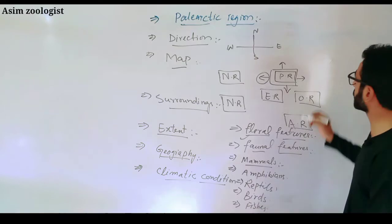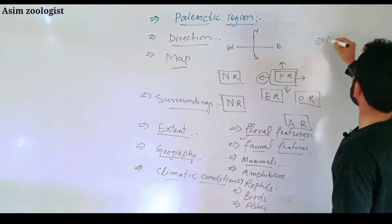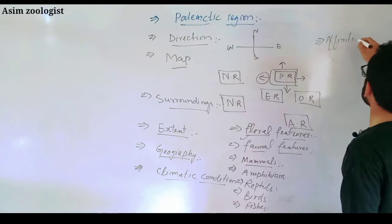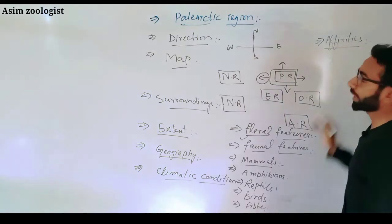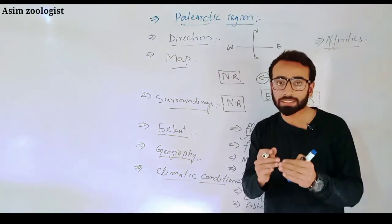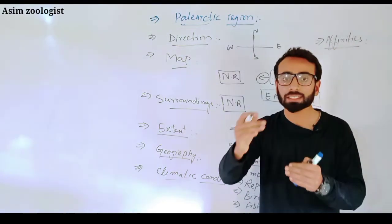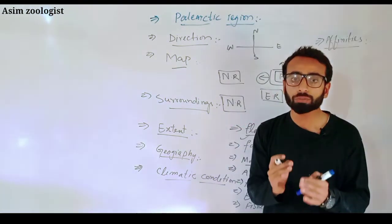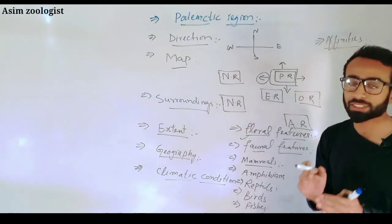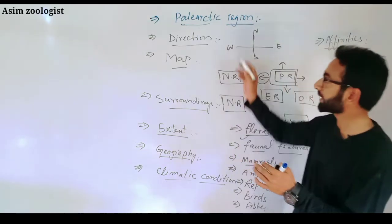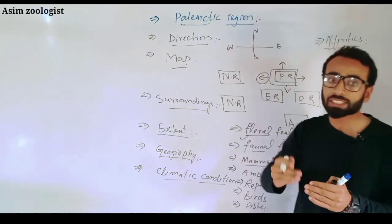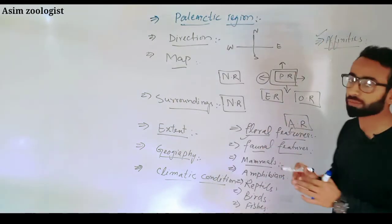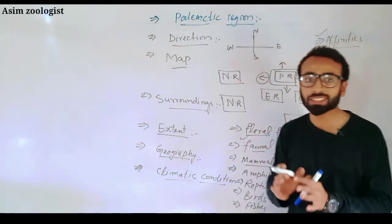The ninth step is affinities. In affinities, you have to mention that this region resembles the Nearctic region or the Neotropical region — meaning this region shares characteristics with that region. So in affinities, you include these types of relationships.